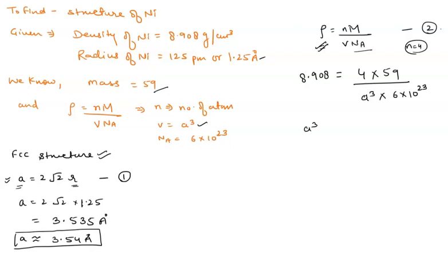Now on solving this, I can write it as 4 into 59 by cross-multiplying it, I can write 8.908 into 6 into 10 to the power 23. On solving this, I will have the value A is equal to 3.54 Angstrom.